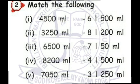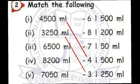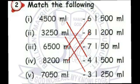Match the following. 4500 milliliter equals 4 liter 500 milliliter. 3250 ml equals 3 liter 250 ml. 6500 ml equals 6 liter 500 ml. 8200 ml equals 8 liter 200 ml. 7050 ml equals 7 liter 50 ml.